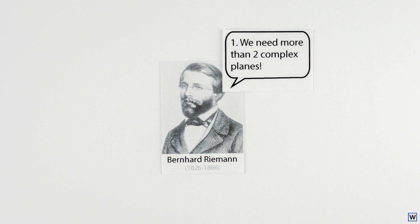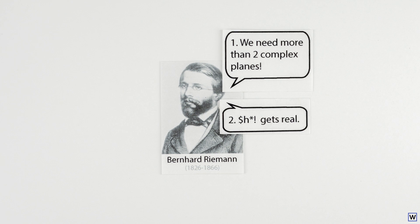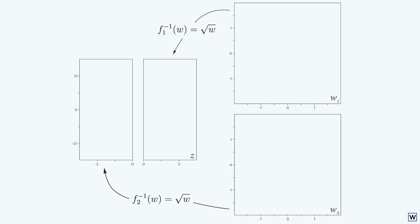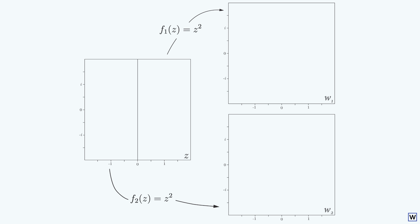Fortunately, that was just part one, and part two is much cooler. Let's consider our discontinuity problem in a bit more detail. We'll switch back to our forward function momentarily and again draw on our z-plane. Let's pay careful attention to where our discontinuities show up, and follow the points along a single path.